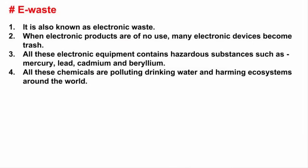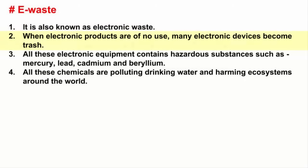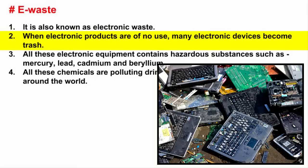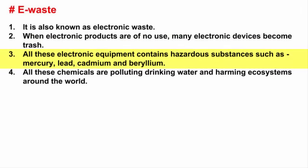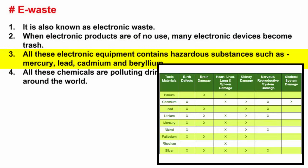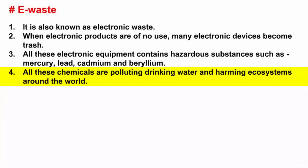The last form of pollution is e-waste, commonly known as electronic waste. When electronic products are of no use, many electronic devices become trash. All these electronic equipment contains hazardous substances such as mercury, lead, cadmium, and beryllium. All these chemicals are toxic substances. They might be found in small quantities, but when added up in volume, the threat to the environment is significant. They are polluting drinking water and harming ecosystems around the world.